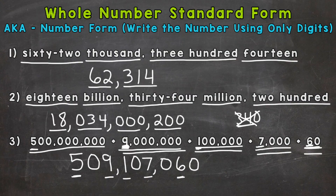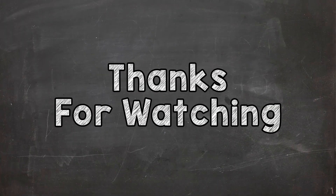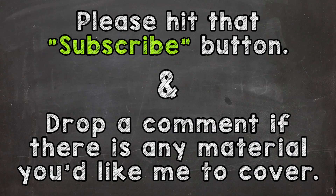There you have it — a few examples of how to go from either word form or expanded form to standard form. Standard form means writing the numbers out using only digits. I hope that helped. Thanks so much for watching. Until next time, peace.